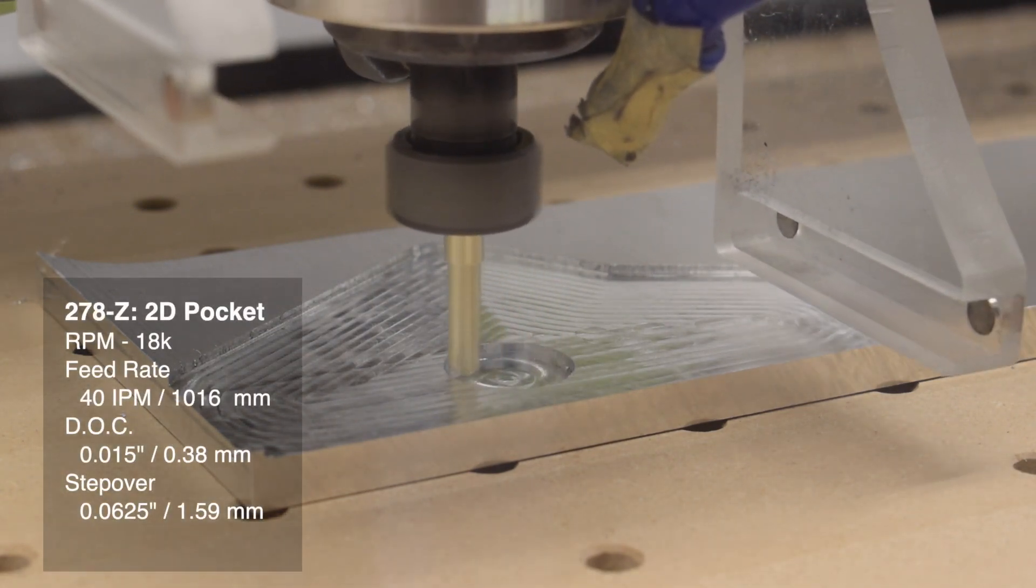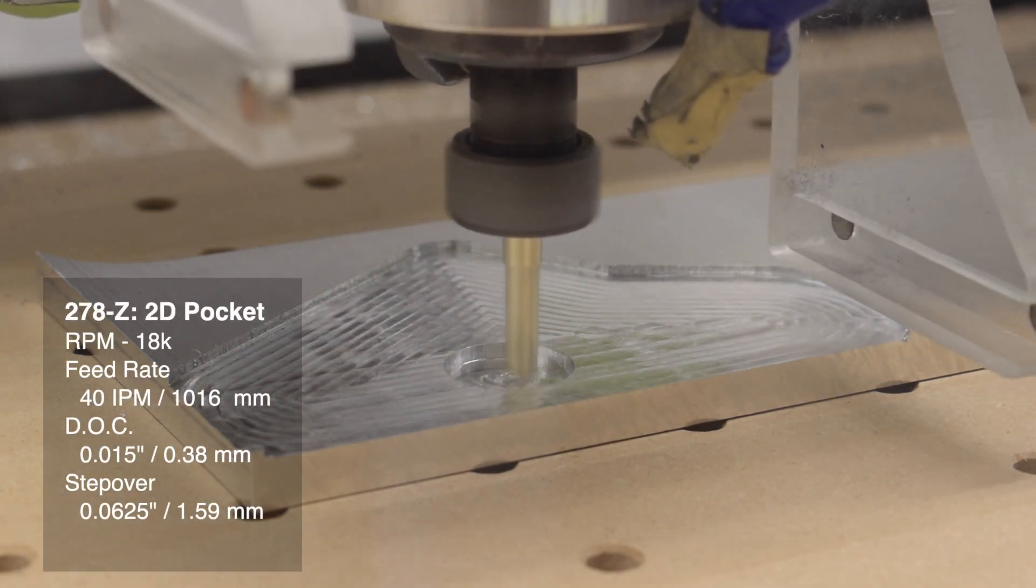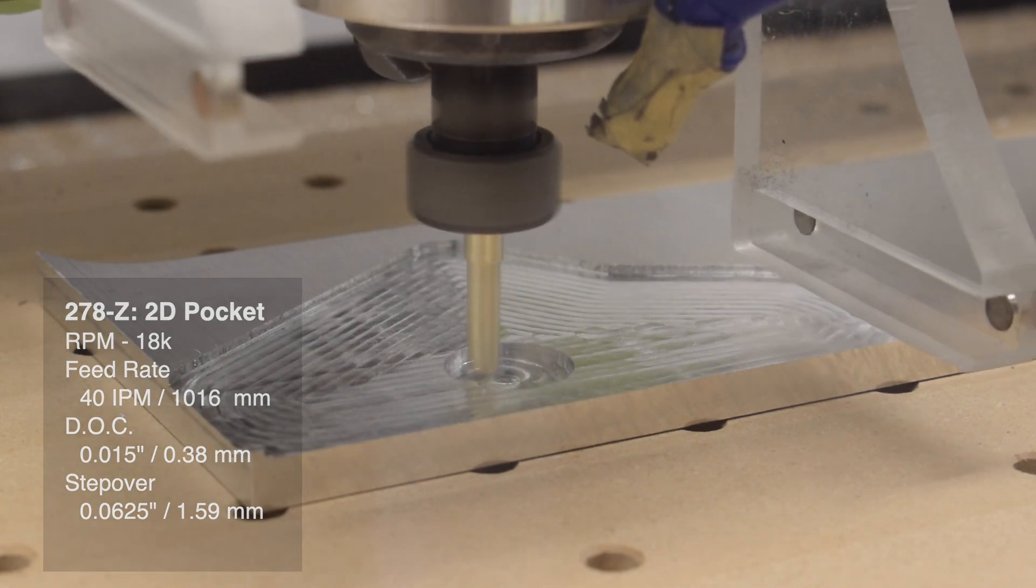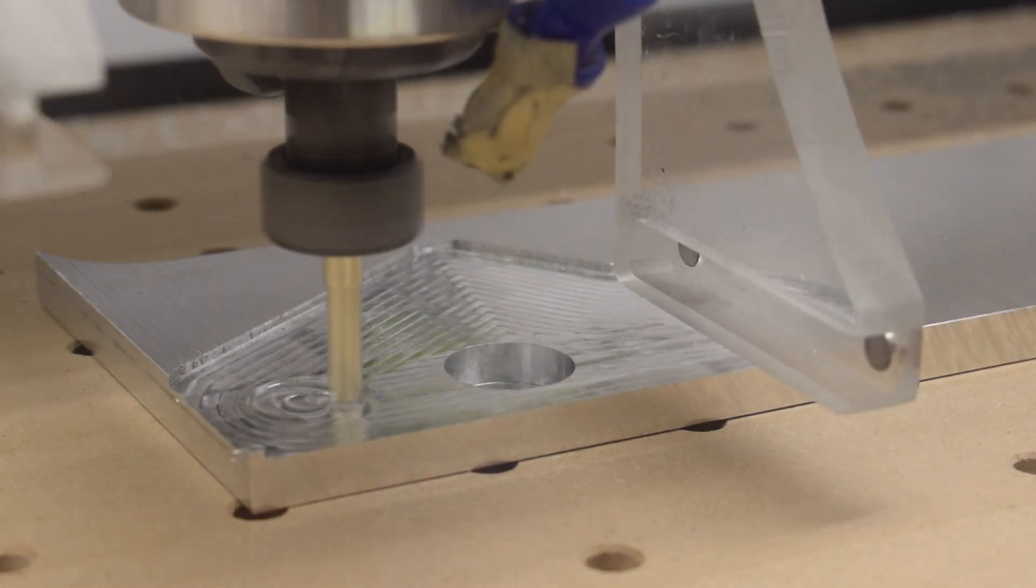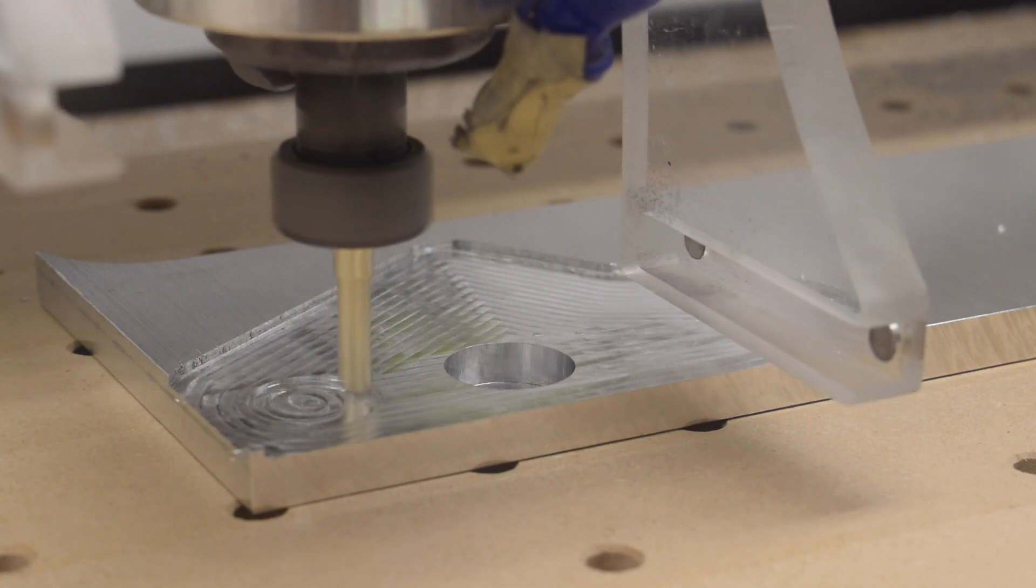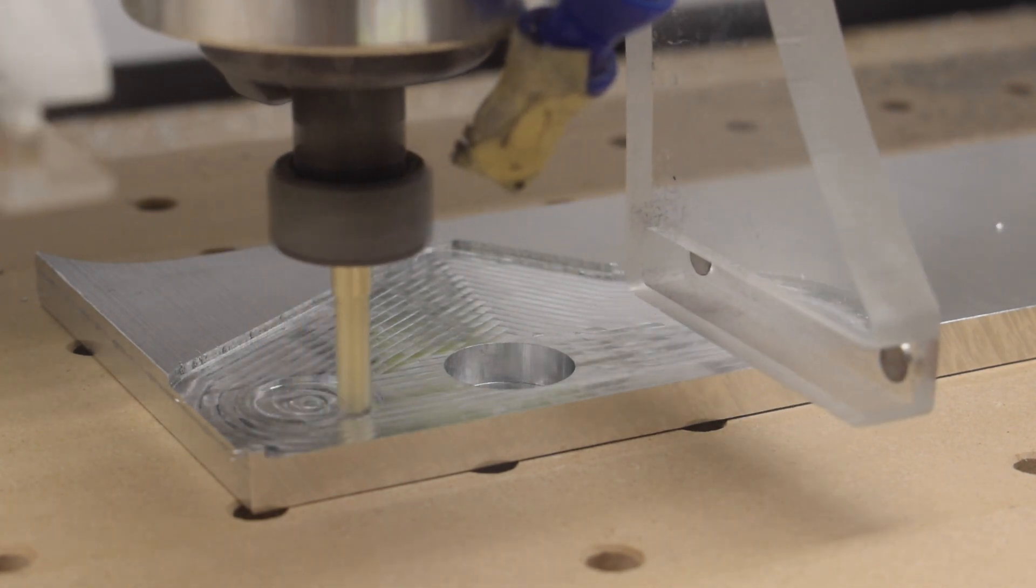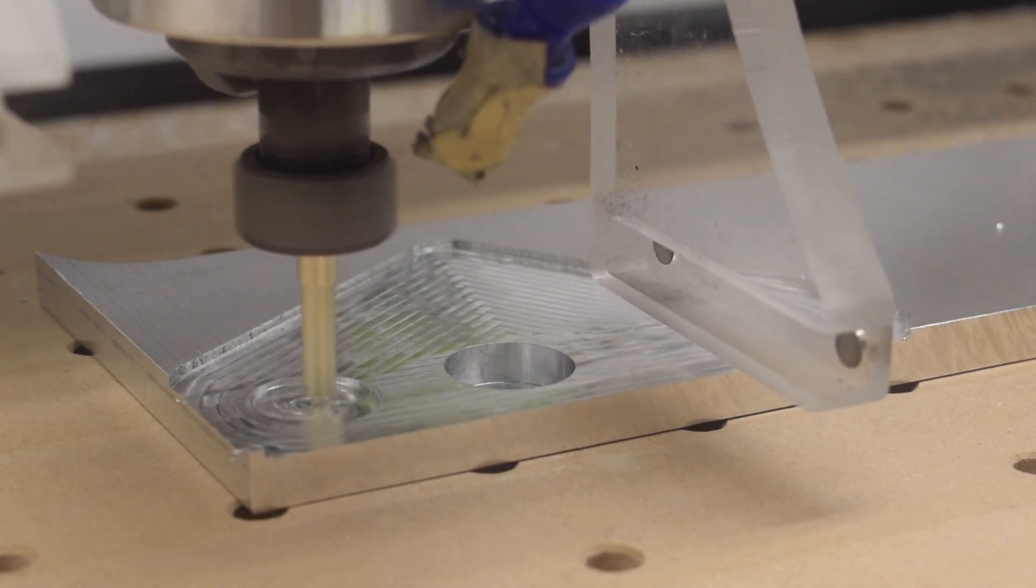18,000 RPM, 40 inches per minute, 15 thou depth of cut. This produces a really healthy chip load of 2.2 thou per tooth, and you can certainly go deeper, but if you aren't using a cam package that lets you do ramp ins or helical entry, I'd rather you keep your cuts shallower and faster.